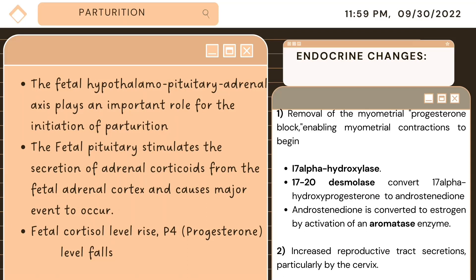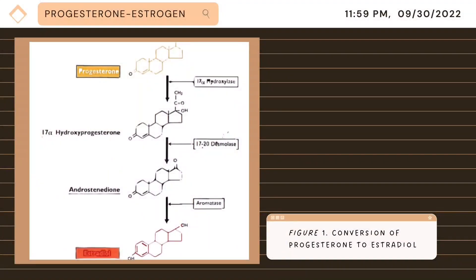The second endocrine change enables the increase of reproductive tract secretions, particularly by the cervix. The elevation of fetal corticoids secreted from the fetal adrenal cortex causes activation of 17-alpha-hydroxylase, 17-to-20-desmolase, and aromatase, which convert progesterone to estradiol. This conversion removes the progesterone block to myometrial activity. Progesterone block is known to suppress myometrial contraction and maintain pregnancy. Thus, removal of the progesterone block induces myometrial activity. In addition to converting progesterone to estradiol, fetal corticoids also cause the placenta to synthesize PGF2-alpha, which helps abolish the progesterone block.